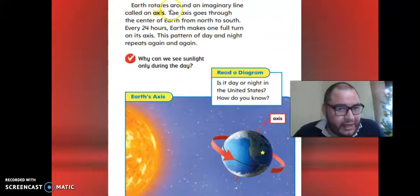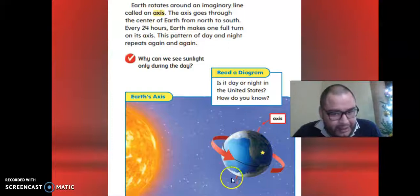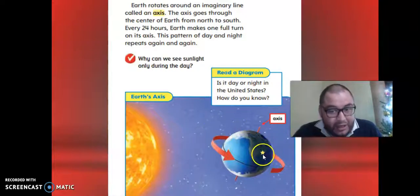Earth rotates around an imaginary line called an axis. These are like the poles of the planet. The name is axis. Is it day or night in the United States? How do you know? Because one part of the planet is in front of the Sun and the other part is not in front.